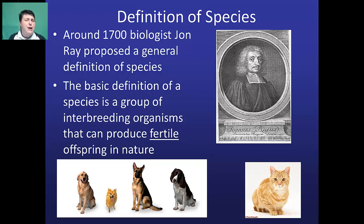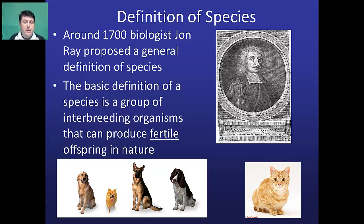So if we're talking about the formation of new species in macroevolution, we need to know what we mean by a species. Around 1700, biologist John Ray proposed a general definition of a species which we pretty much use today. The basic definition of a species is a group of interbreeding organisms that can produce fertile offspring in nature — meaning these organisms can reproduce together and their offspring can also reproduce and make offspring.